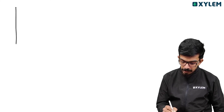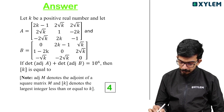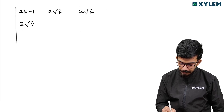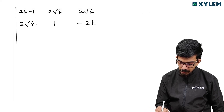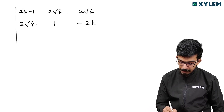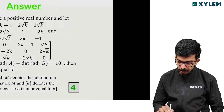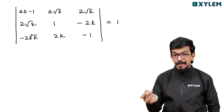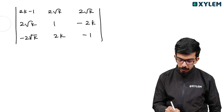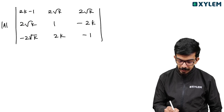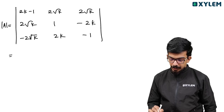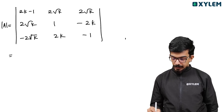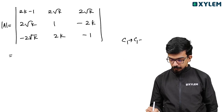The determinant of A is the 3x3 matrix with entries 2k minus 1, 2 root k, 2 root k; 2 root k, 1 minus 2k; and so on. This squared equals 10 to the power 6, so determinant of A equals 10 cubed equals 1000. We apply column operations: column 2 minus column 3.